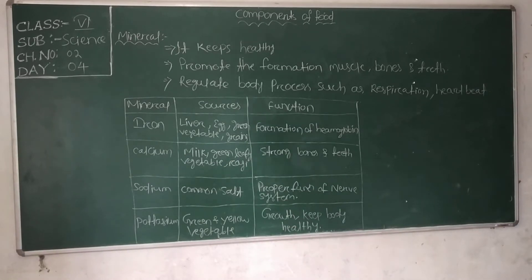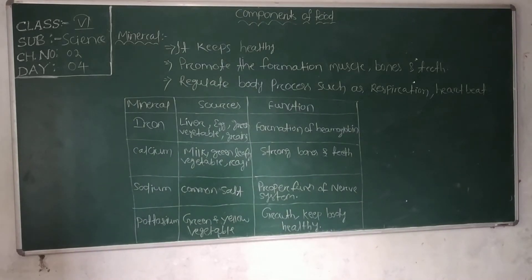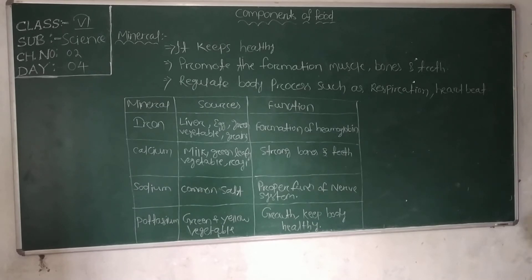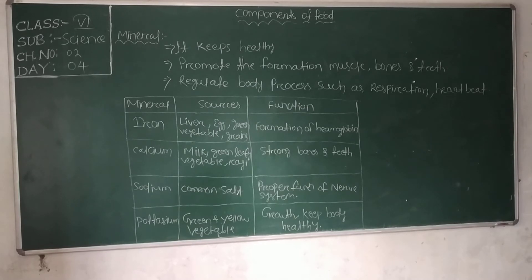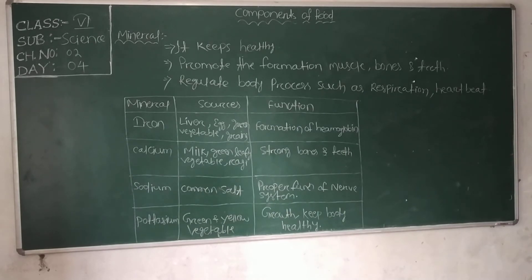Minerals also help in the formation of certain body fluids such as blood and hydrochloric acid. Hydrochloric acid is the gastric juice that helps to digest food. They regulate and promote the formation of muscles, bones, and teeth, and regulate body processes such as respiration, heart rate, and nerve impulse transmission. These are the important roles of minerals in our body.